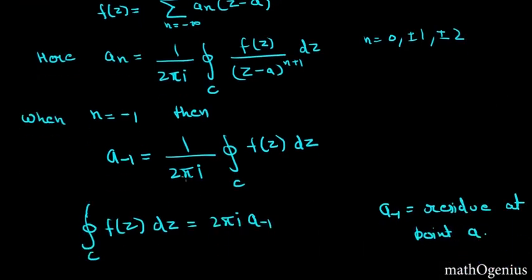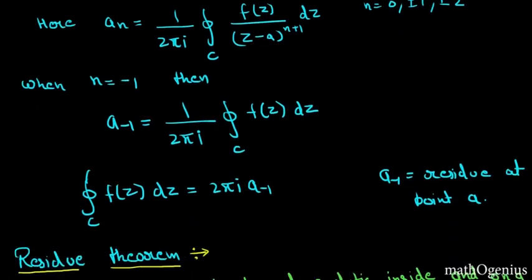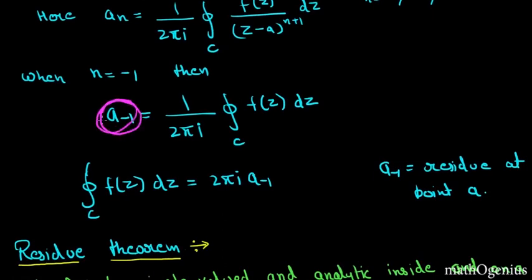The integral of this is equal to 2πi multiplied by a_{-1}. And this a_{-1} thing, this is very important. We have to find this in many types of integrals, so this is really important.